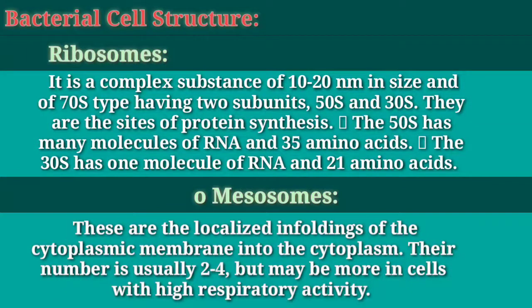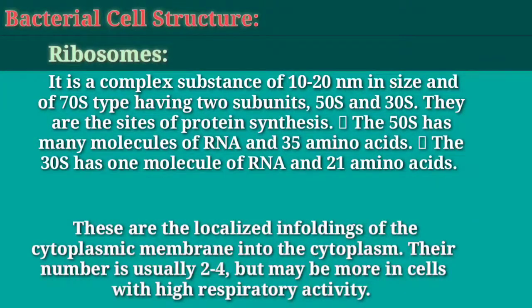Mesosomes. These are the localized infoldings of the cytoplasmic membrane into the cytoplasm. Their number is usually 2 to 4, but may be more in cells with high respiratory activity.